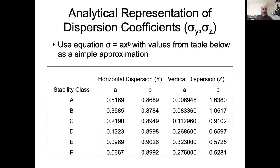So that covers the dispersion component. That dispersion is a function of atmospheric stability — more unstable causes more mixing, particularly more vertical mixing. And that's a function of downwind distance, which is a reflection of the fact that wind speed is effectively causing things to move downwind. In the next video, we're going to pick up with an explanation of the effect of stack height.